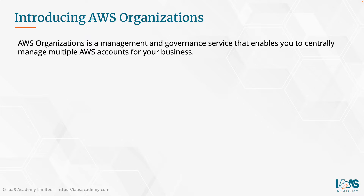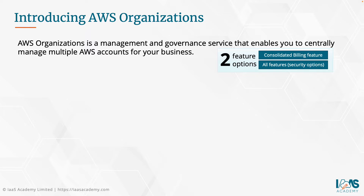The AWS Organizations service actually comes with two key feature options. There is the Consolidated Billing feature, which essentially is a limited version of the organization service. The Consolidated Billing feature allows you to aggregate the costs of the individual AWS accounts as one bill. The second option is the All Features option, which includes the Consolidated Billing feature, but also a number of security options to allow you to control exactly what type of services can be consumed in those AWS accounts, what resources can be created, and what API actions can or cannot be performed.